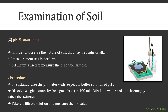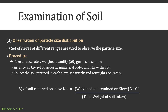Take the filtered solution and measure the pH value. Then, for observation of particle size distribution, sets of sieves of different ranges are used. Procedure: accurately weigh 50 grams of soil sample, arrange all sieves in numerical order, and shake the soil. Collect the soil retained in each sieve separately and re-weigh accurately. The formula is: percentage of soil retained on sieve = (weight of soil retained on sieve × 200) / total weight of soil taken.